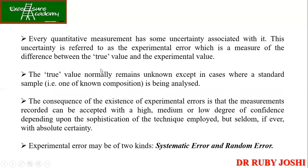Every quantitative measurement has some uncertainty associated with it, and this is referred to as experimental error — a measure of the difference between the true value and the experimental value. The true value remains unknown except when a standard sample is being analyzed. Because of experimental error, measurements can be recorded with a high, medium, or low degree of confidence. There are two types of experimental errors: systematic error and random error.